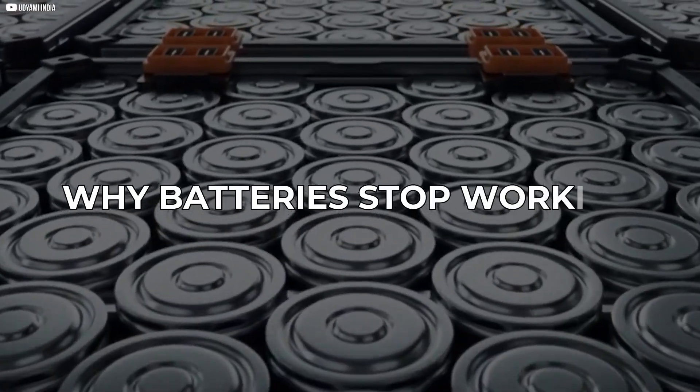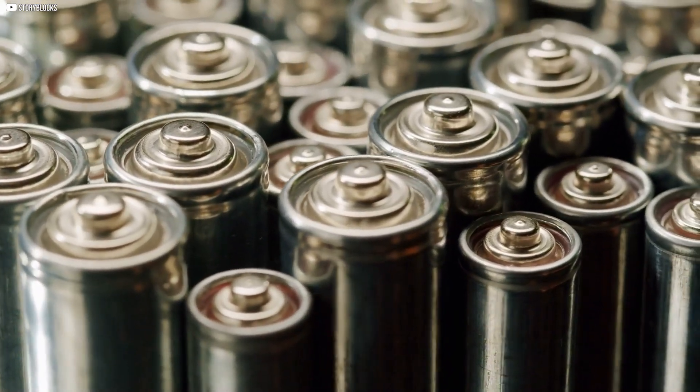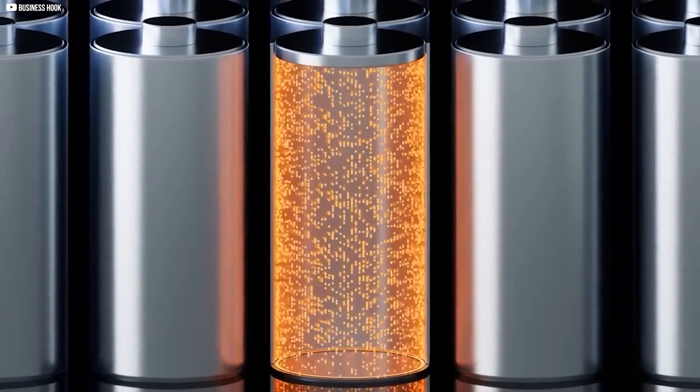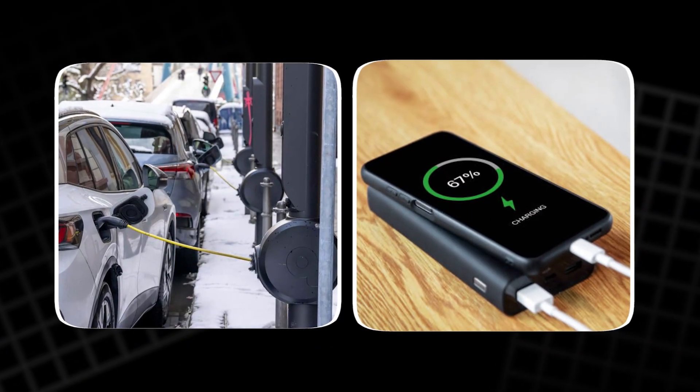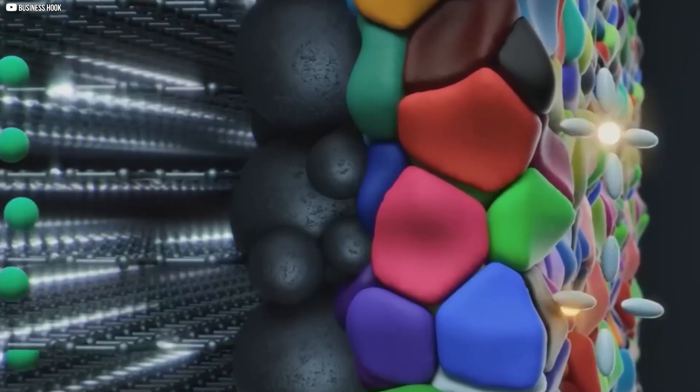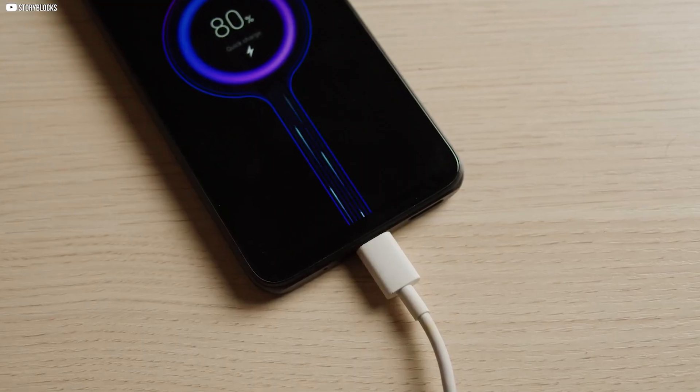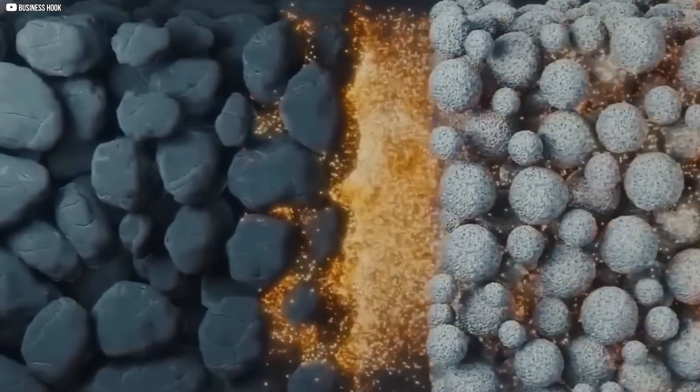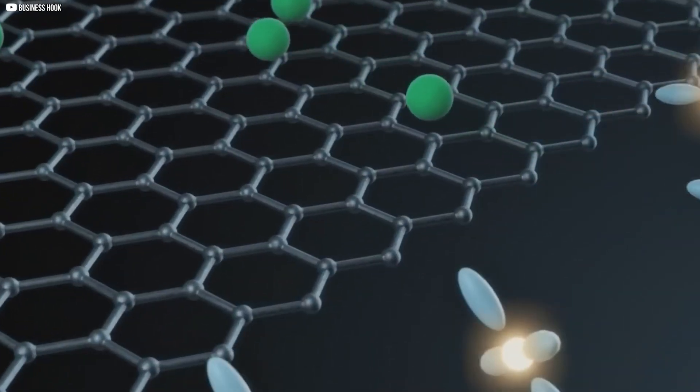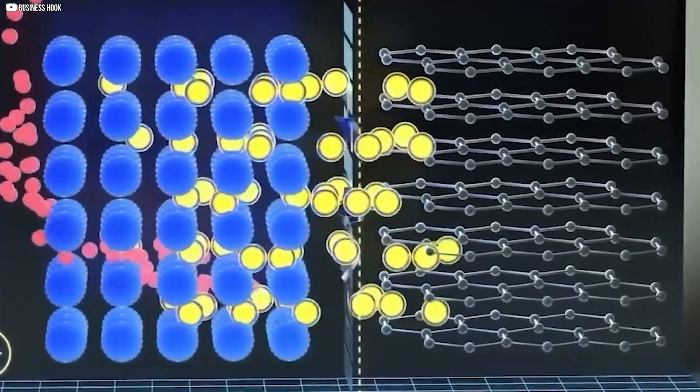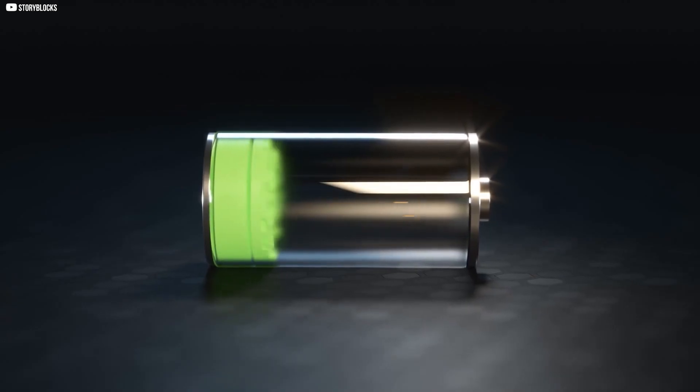Why batteries stop working? Lithium batteries stop working because of science. Inside, lithium ions move to create energy, powering things like phones and cars. Over time, some lithium ions get stuck and form clumps called dead lithium. This blocks the flow of energy, causing slower charging, less power, and shorter battery life. Sharp structures called dendrites can also grow inside and cause damage or even fires. A layer builds up on the surface, blocking the lithium flow even more. Fast charging and cold weather make it worse.